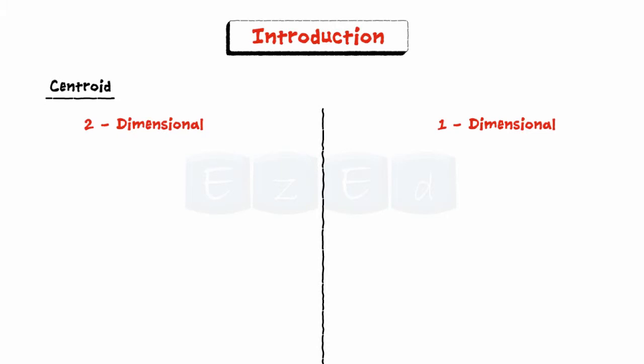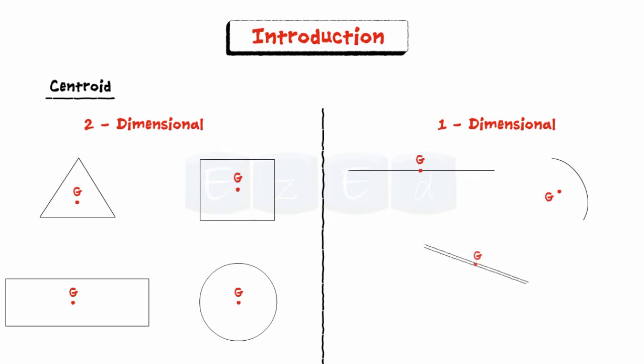For example, two-dimensional figures, areas like a triangle, square, rectangle, circle, or for one-dimensional figures, wire bends or lines like straight lines, curved arc, wires, etc.